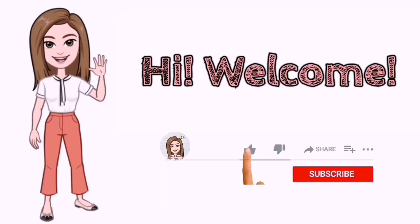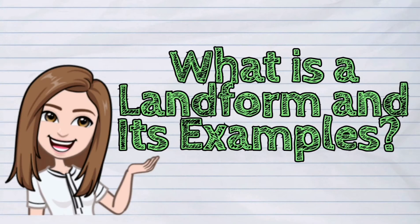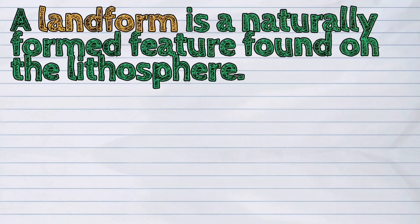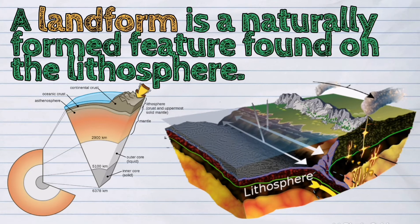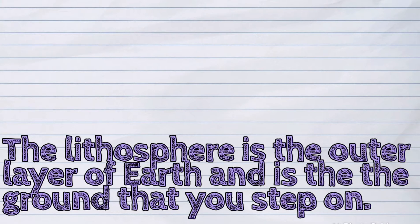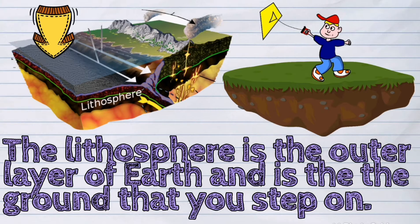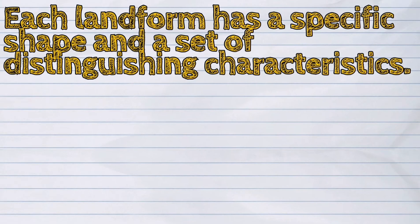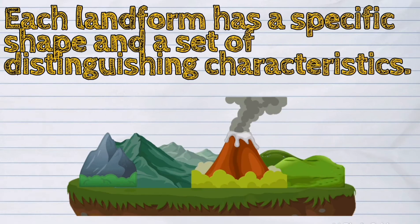Hi! Welcome to iQuestionPH. Today's question is: What is a landform and its examples? A landform is a naturally formed feature found on the lithosphere. The lithosphere is the outer layer of Earth and is the ground that you step on. Each landform has a specific shape and a set of distinguishing characteristics.